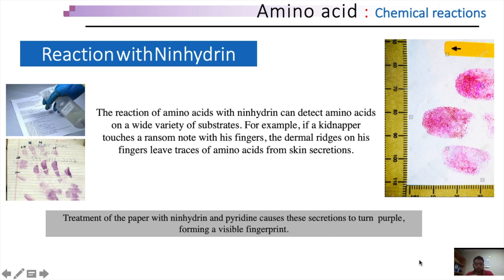For example, if you paid a kidnapper with ransom money and the kidnapper touched it with their fingers, the dermal ridges of their fingers leave traces of amino acids on the note from skin secretions. By treating this paper or note with ninhydrin and pyridine, these secretions on the paper will turn purple, thus developing a visible fingerprint.